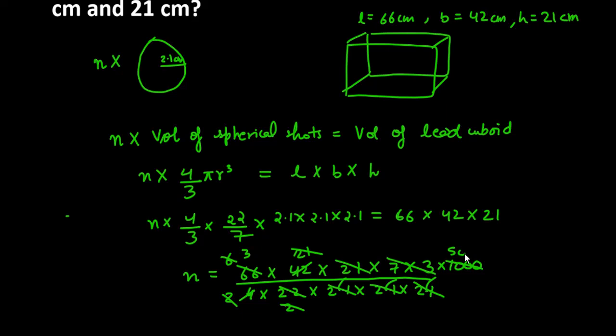So 500 times 3 is 1500. That means from one cuboid, you can get 1500 spherical shots. That's the answer for question number 11. Now let's start with question number 12.